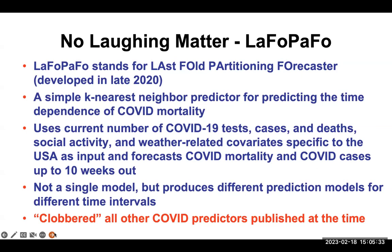The neat thing about LAFO-PAFO is it wasn't a single model — this is where almost everyone else fumbled. Everyone else was trying to come up with a single equation that would predict forever. LAFO-PAFO produces different prediction models for different time intervals, so it's able to learn from trends that happened over shorter periods of time. Traditional methods, if they see something going up, predict it will go up forever; if something flattens out, they predict flat forever. Because LAFO-PAFO takes other pieces of data, it can predict when things go up and down.